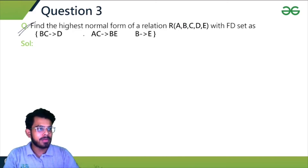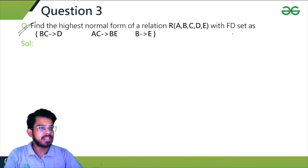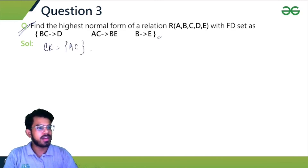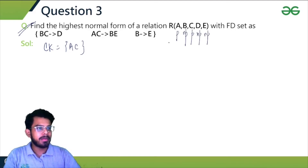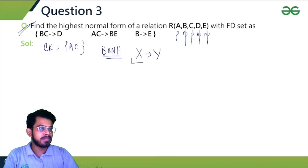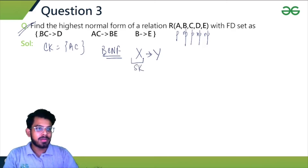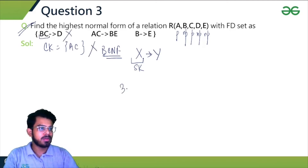Now question 3: find the highest normal form of a relation R with attributes A, B, C, D, E and the given FD set. The candidate key for this relation is AC only. So A and C are prime attributes; B, D, and E are non-prime attributes. For BCNF, X must be a super key for every non-trivial FD. BC is not a super key, so this doesn't satisfy BCNF — the relation is not in BCNF.